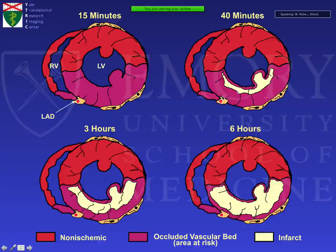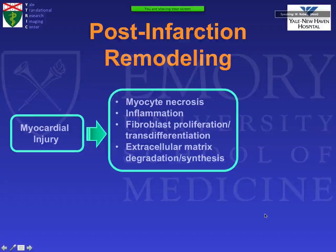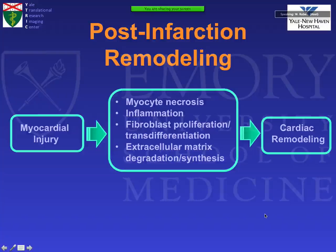With myocardial infarction, there is a wavefront progression of infarction with coronary occlusion. There's an ischemic risk area, and the infarct area progresses from the endocardium to the epicardium. That infarct is a function of the area at risk, time of occlusion, and loading conditions. One starts with myocardial injury, then necrosis, inflammation, fibroblast proliferation and transdifferentiation, and important alterations in the extracellular matrix, resulting in cardiac remodeling.